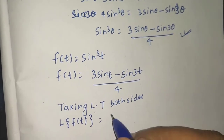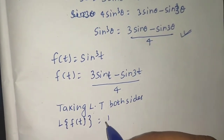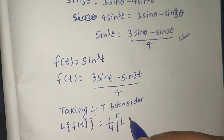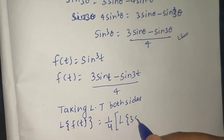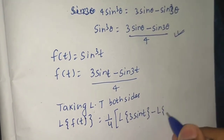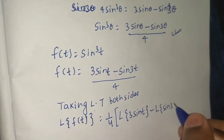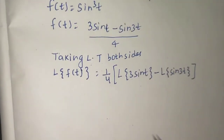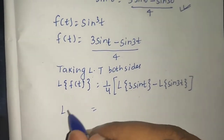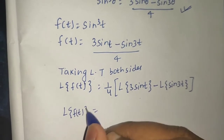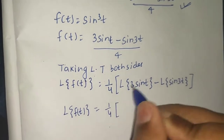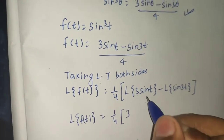Laplace of f(t) is equal to (1/4) times [Laplace of 3·sin(t) minus Laplace of sin(3t)]. Taking 1/4 out, inside we will have 3 times Laplace of sin(t).